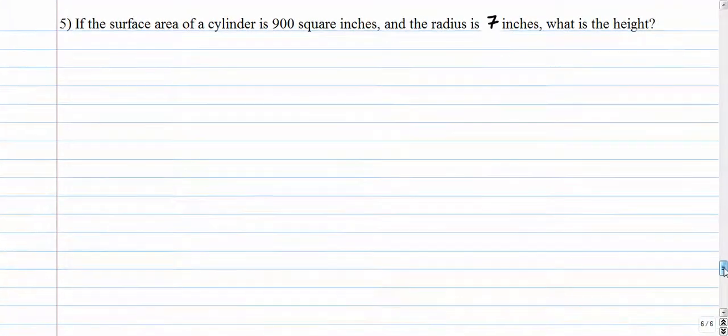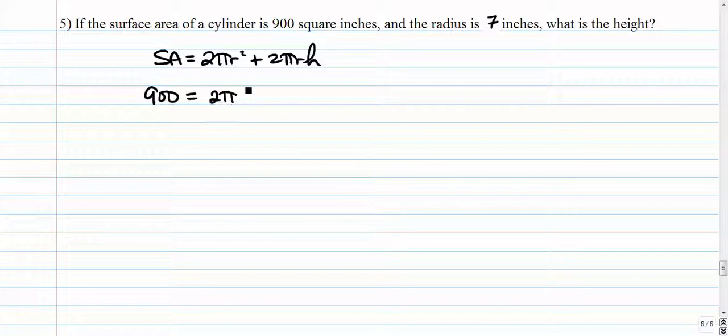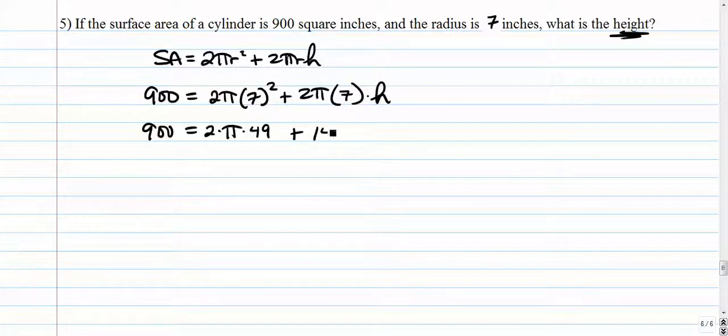Alright, so next up. Let's make number 5 a little bit easier. It doesn't require quadratics. But the surface area of a cylinder is 900. So let's write down the formula. The formula is 900, 2 times pi times radius squared. Thankfully, they give us the radius here, 100 times 2 times pi times 7. And the height is missing. That's what we're trying to find. Alright, so 900 is equal to 2 times pi times 49, plus 2 times pi times 7. Well, that's 14 pi times h. So 900 is equal to 98 pi plus 14 pi times h.